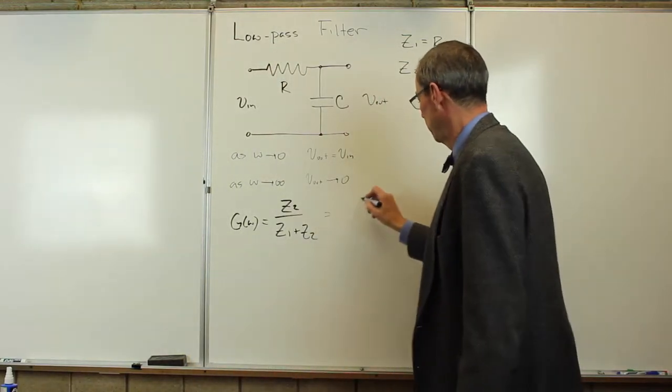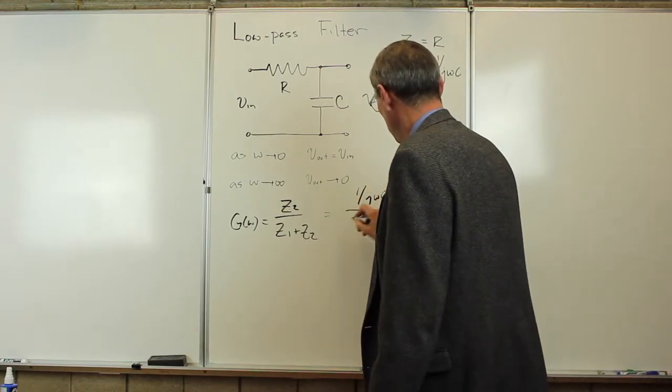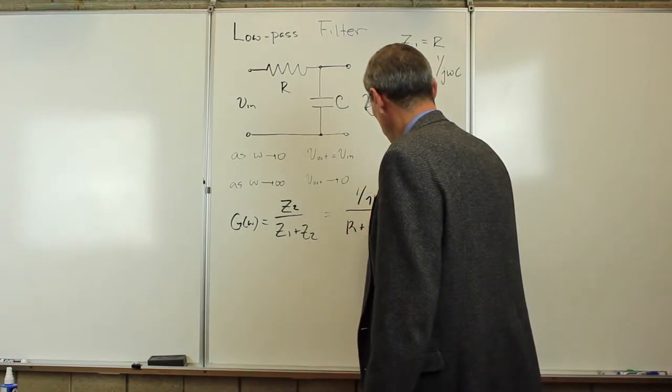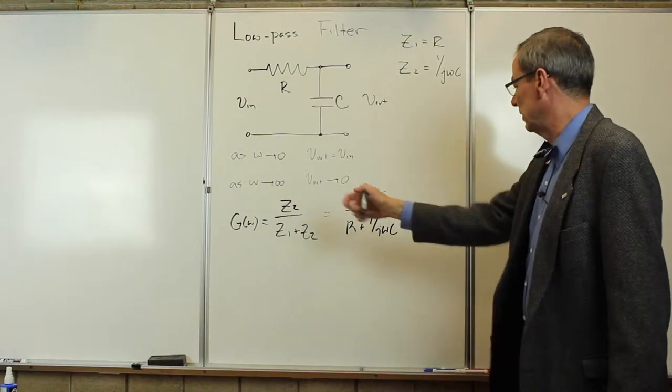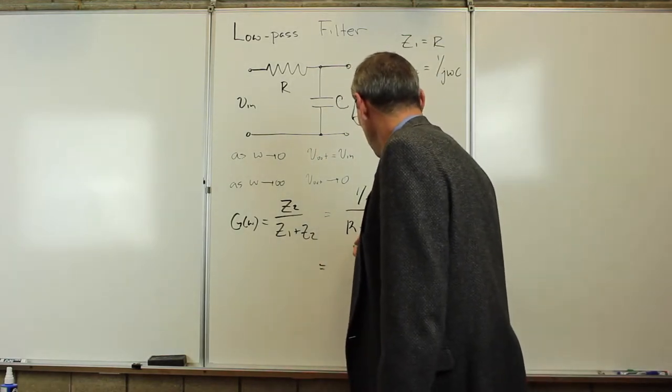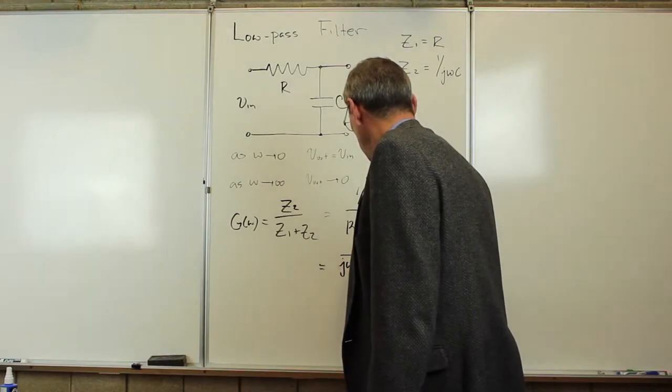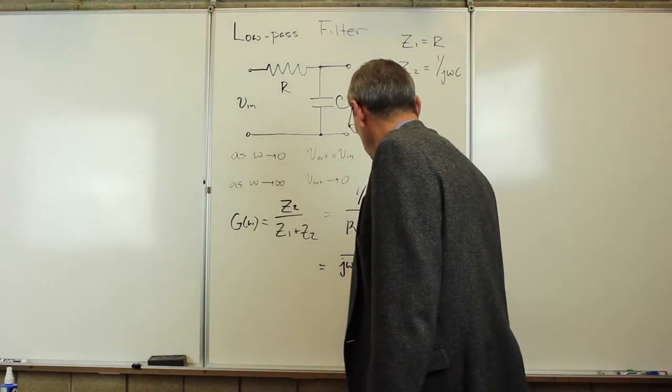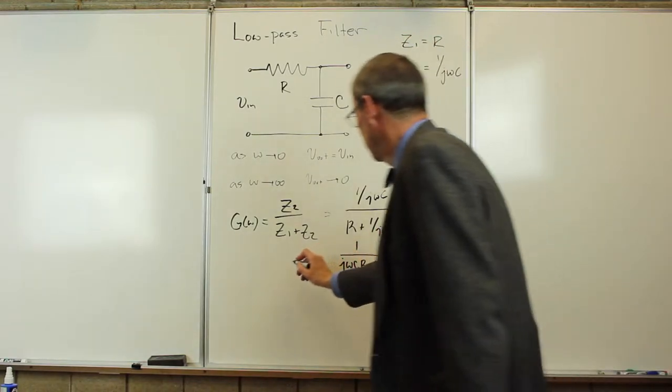Which is simply 1 over J omega C over R plus 1 over J omega C. We factor out the 1 over J omega C from both sides, and I'm going to get 1 over J omega C R plus 1.